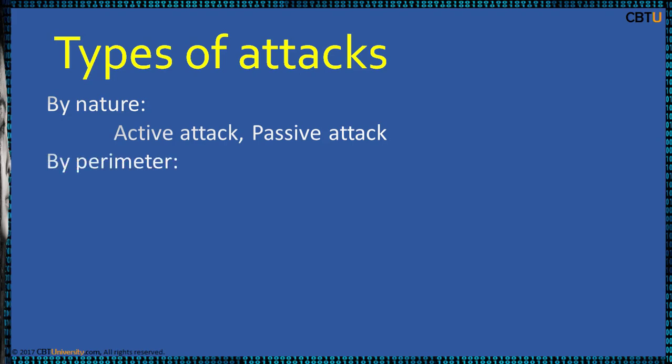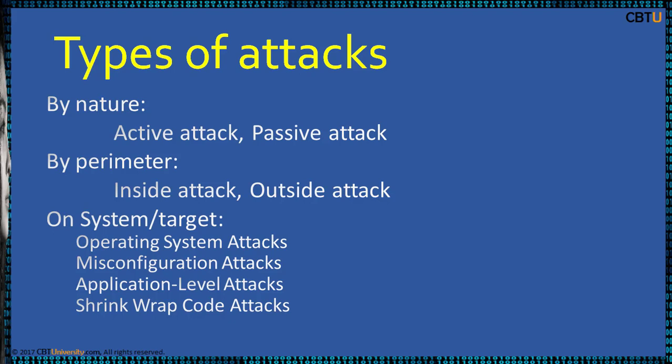By parameter, attacks are classified as inside attack or outside attack. An inside attack is initiated inside the security perimeter, possibly by an authorized user. An outside attack is carried out by an unauthorized or illegitimate user. On a system target, attacks include Operating System attacks, misconfiguration attacks, application-level attacks, and shrink wrap code attacks — which exploit holes in unpatched or poorly configured software.